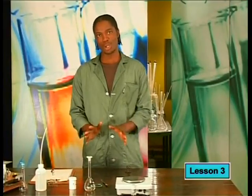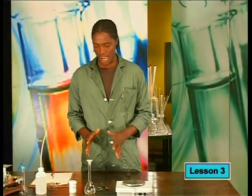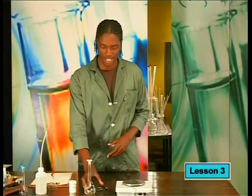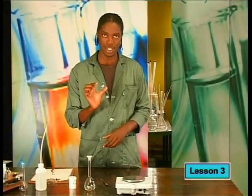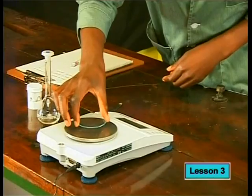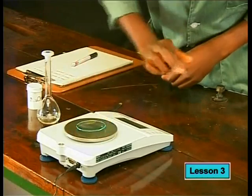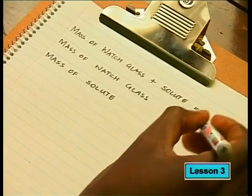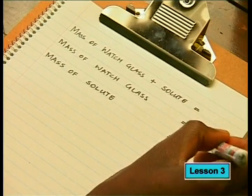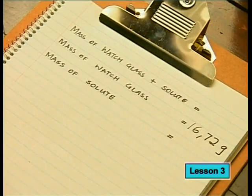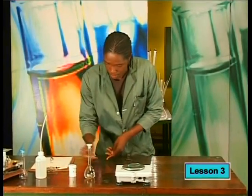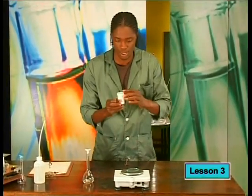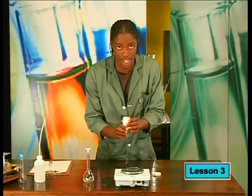Let's start our investigation of solutions by going to the lab. I'm going to show you how to make a solution of sodium hydroxide of known concentration. To do that, I need to weigh out the mass of the solute. First I need to weigh out the mass of the empty watch glass — make sure it's clean with no single dust grain on it. I've got exactly 16.72 grams. It's very important to always record your values. Now I'm going to weigh out the mass of my solute, sodium hydroxide, very carefully.